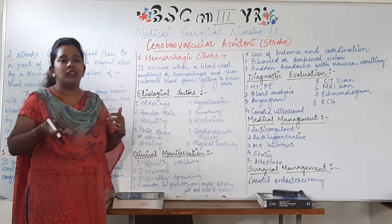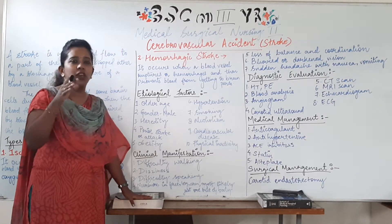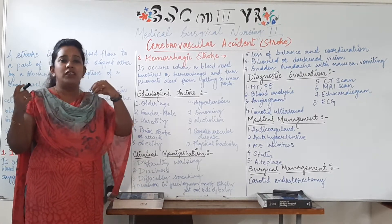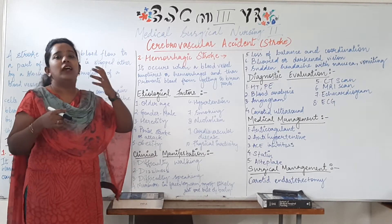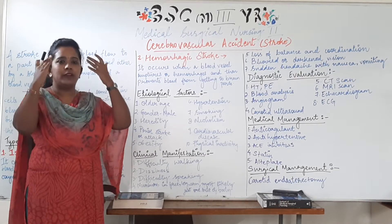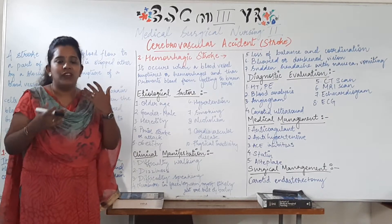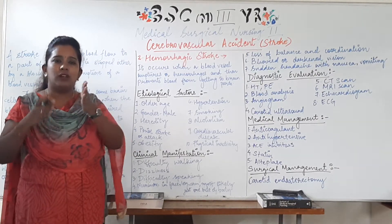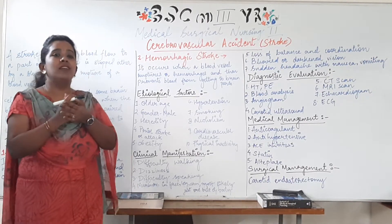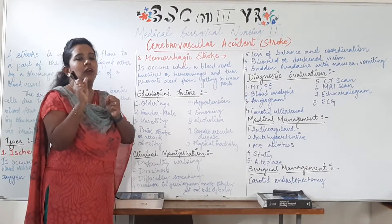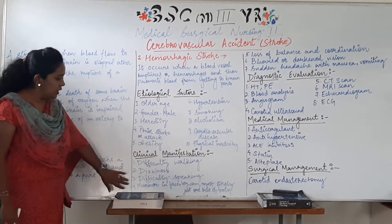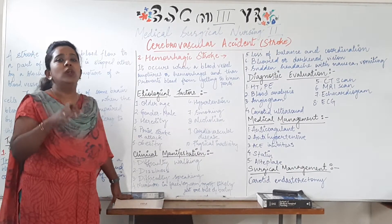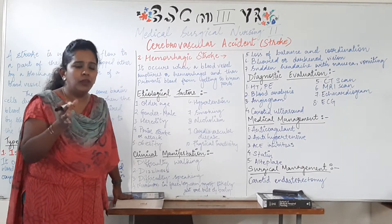There could be difficulty in speaking — the person is unable to speak well — as well as difficulty understanding what others are saying. This manifests as confusion and alteration in consciousness. Numbness also starts, typically in one part of the body, related to the one part of the brain not receiving proper blood supply.